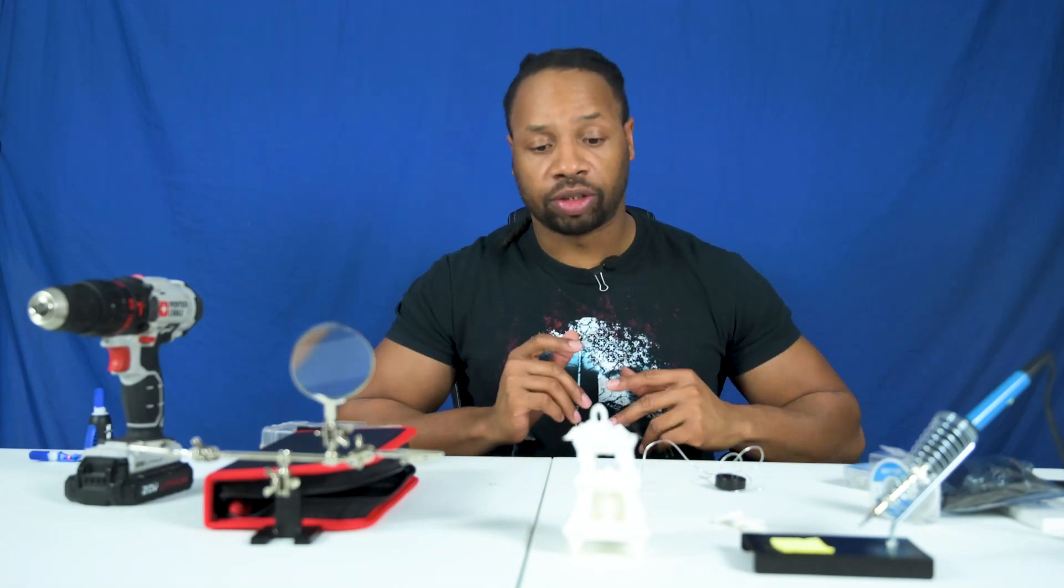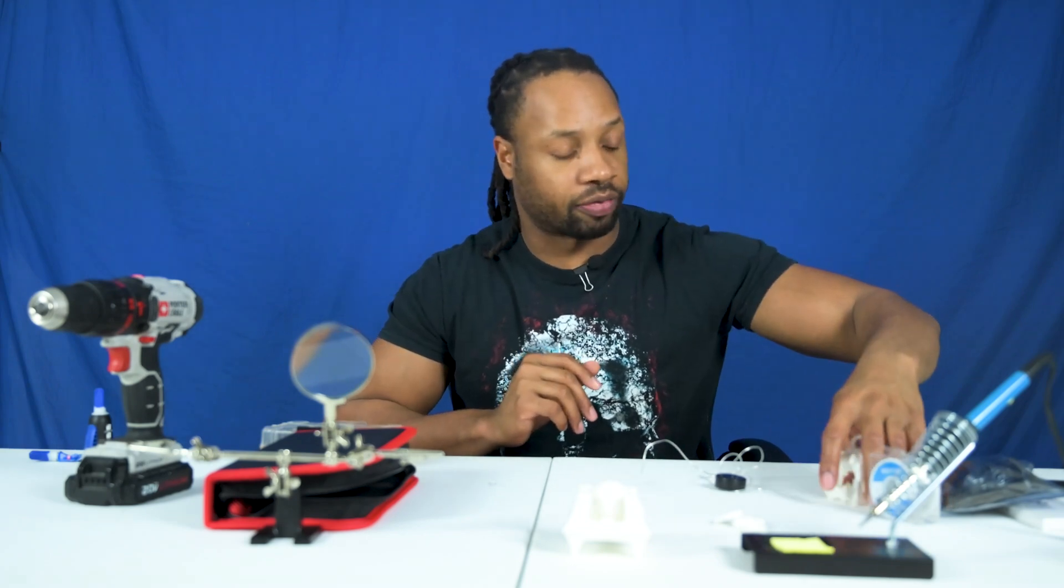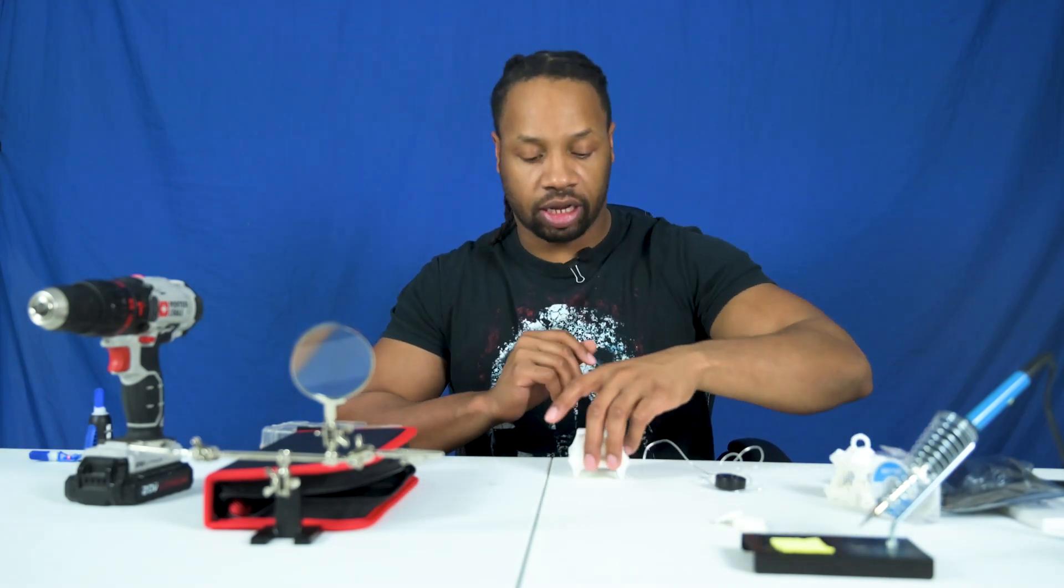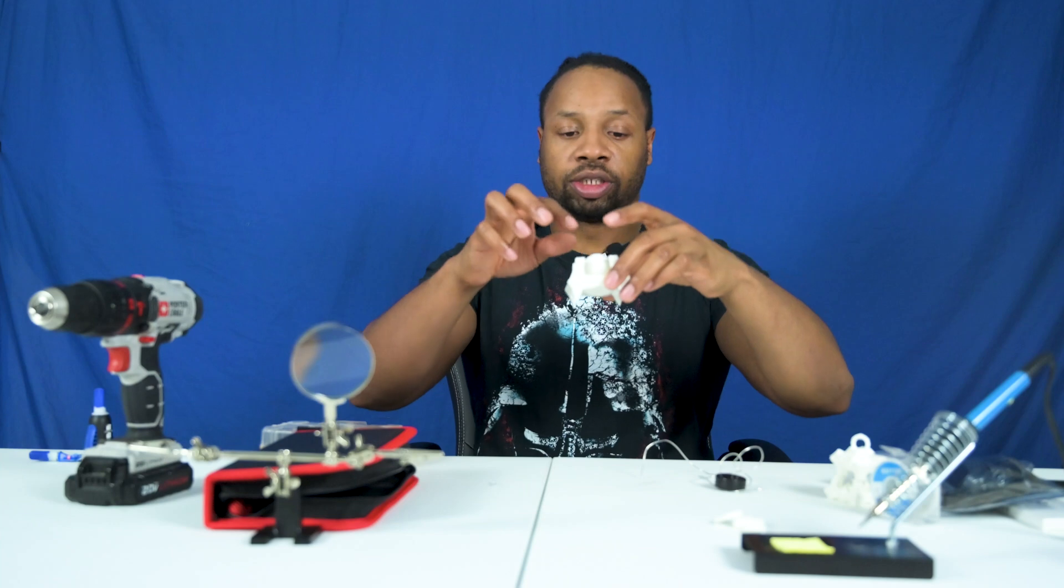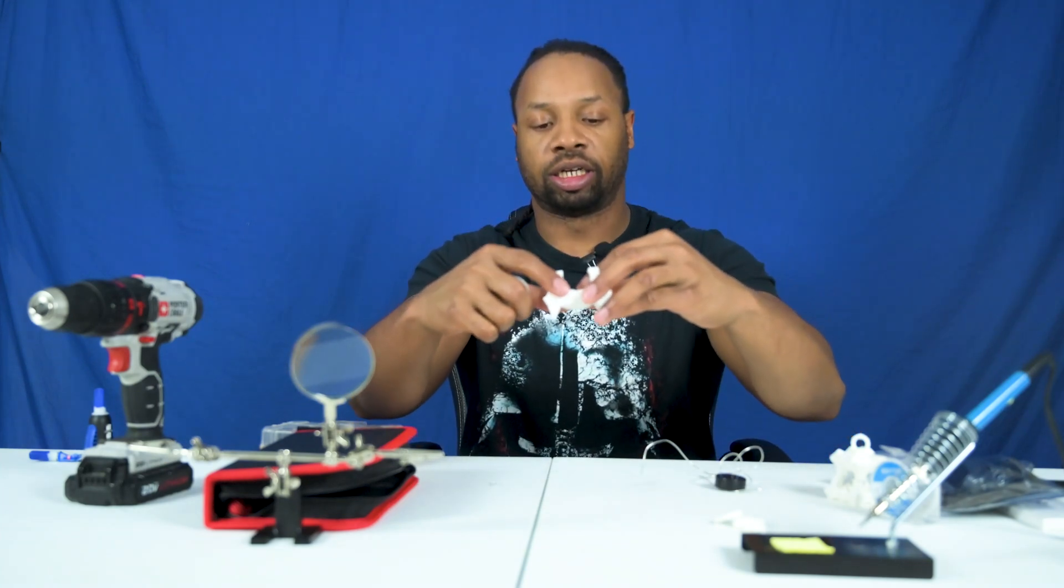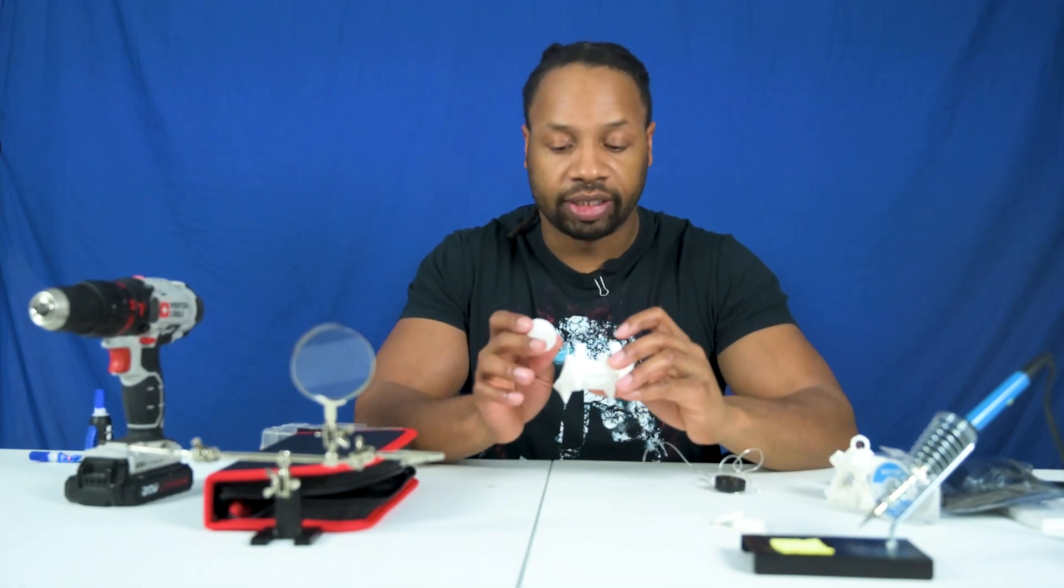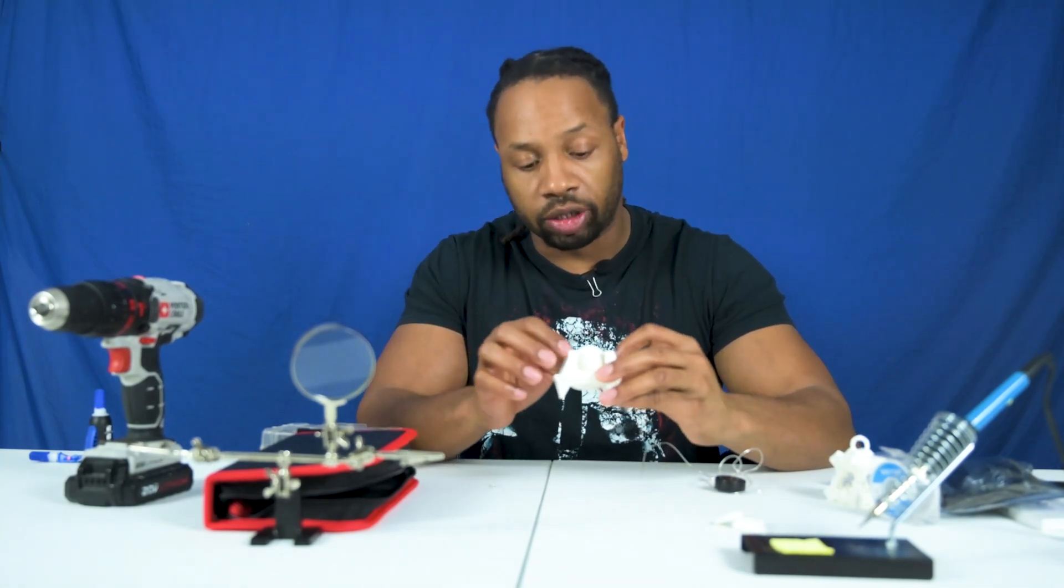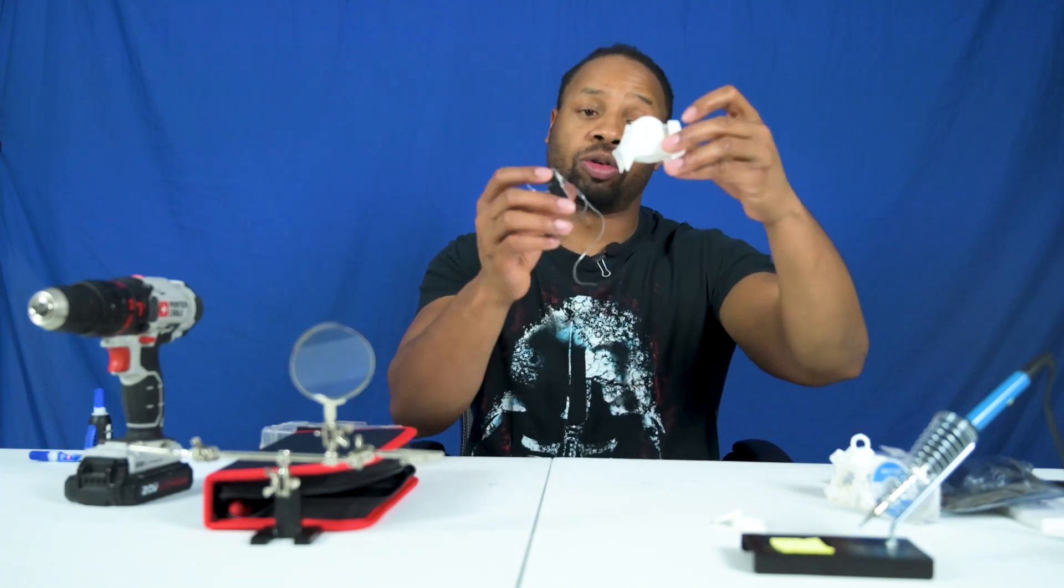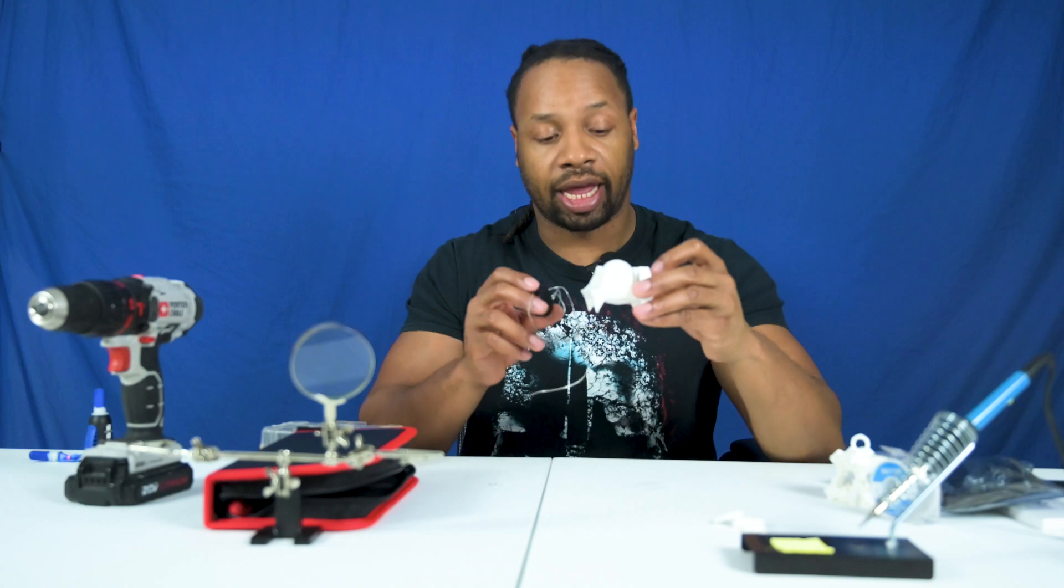So the very first thing we're going to go ahead and do is take off the top part of Thresh's lantern here, and then we're going to move on to the base. The base is where I'm going to be putting the light and I need to go ahead and drill a hole to get it to fit there. So I'm going to drill a hole straight to the bottom that will allow me to run the wires to it, put the light in place, and then move on to the next step. So let's go ahead and do that.